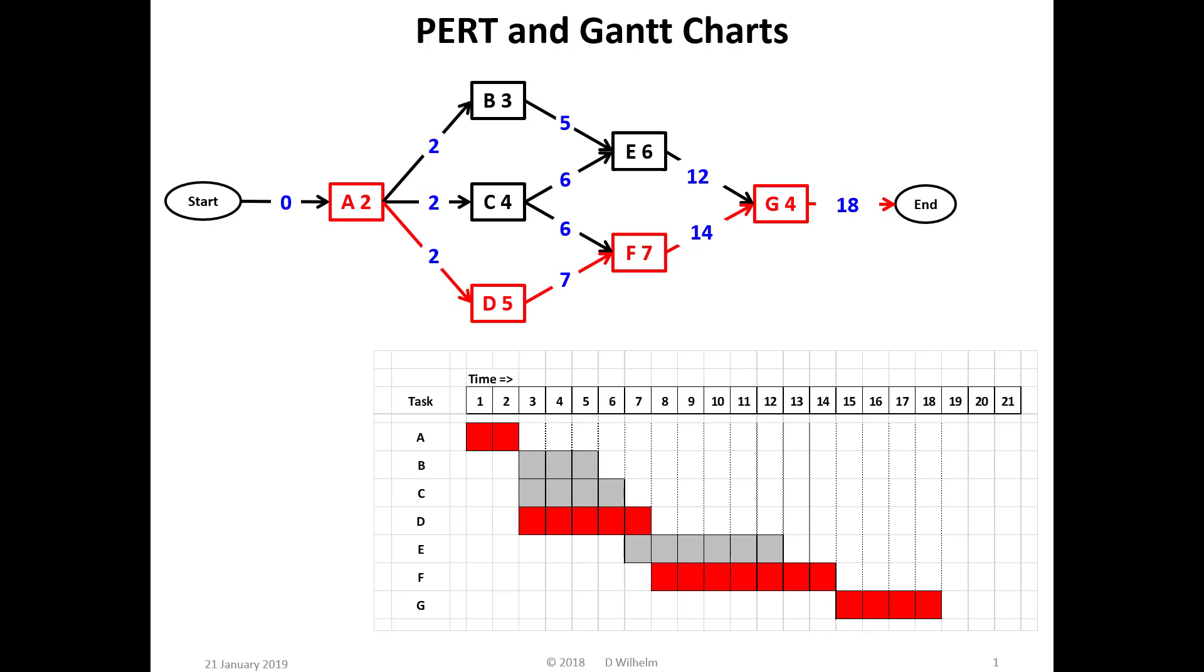The bottom one is a Gantt chart, useful primarily during the leading and controlling phases of a project. There are a number of claims to initiating this chart type, but Henry Gantt seems to be the person most often credited with its development around 1905.